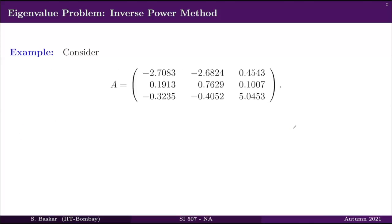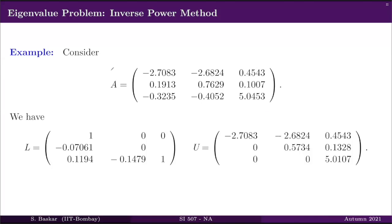We consider the matrix A given in one of our exercise problems. We would like to apply the inverse power method for A. I prefer to use LU factorization. With this in view, I have factorized A using Doolittle factorization, obtaining L and U.